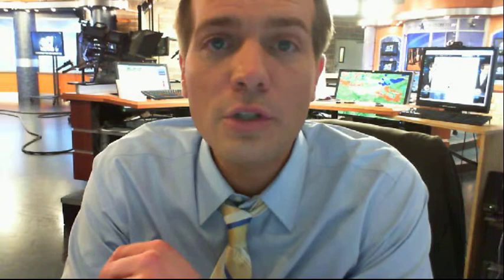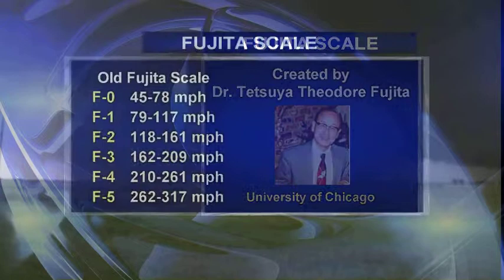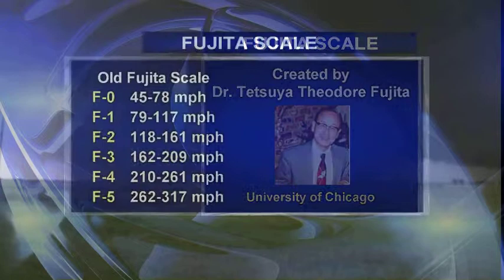What we have now is a scale that ranks the severity and the intensity of tornadoes. It's called the Fujita scale. The Fujita scale is named after a famous scientist, Dr. Fujita, who was at the University of Chicago when he did most of his research. He studied tornadoes, and in particular he studied what happened after the tornadoes. He went out and took thousands of pictures of tornado damage, and he was able to create a scale that ranks the strength of tornadoes by looking at the damage that they do.